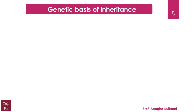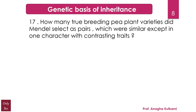The next question relates with genetic basis of inheritance: how many true-breeding pea plant varieties did Mendel select as pairs which were similar except in one character with contrasting traits? Options: A) 2, B) 14, C) 8, D) 4. The correct answer is B — 14, because there were 7 pairs of contrasting traits. This is a fairly straightforward question.